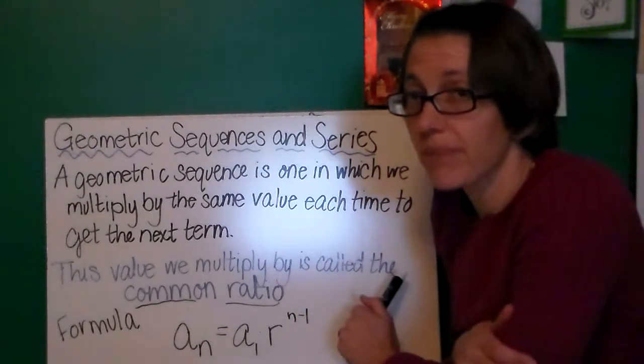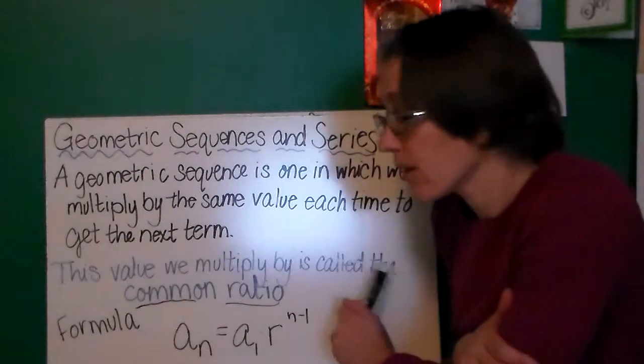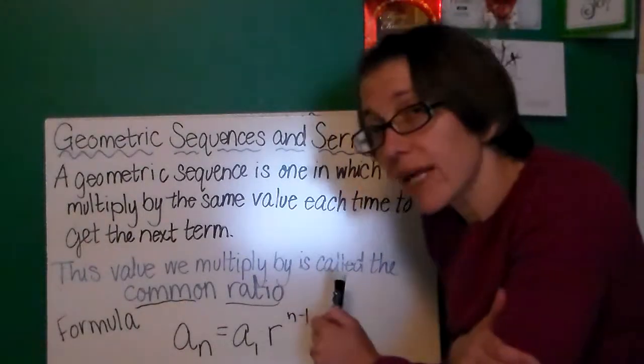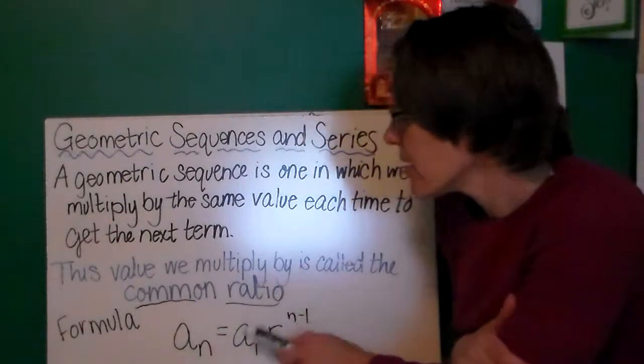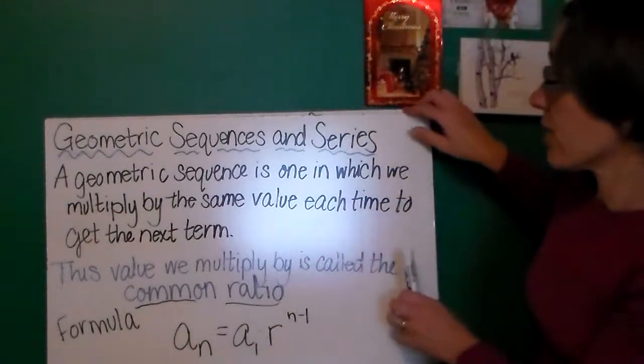It's so important to remember the order of operations here. Always raise that common ratio to the exponent and then multiply it by the first term.